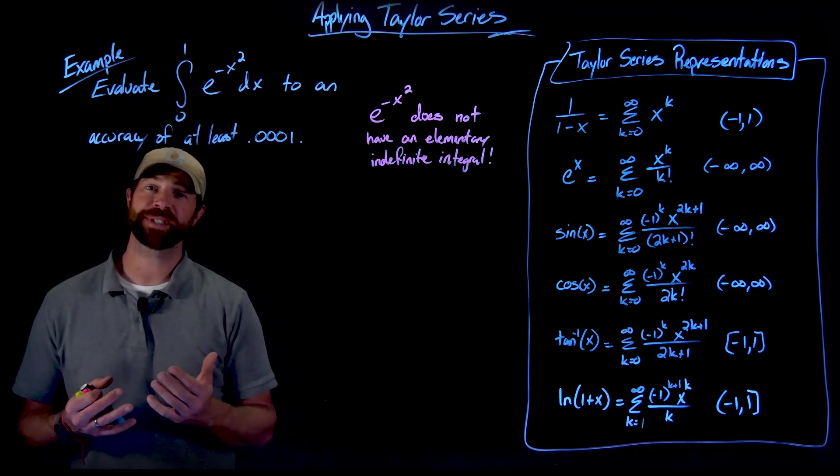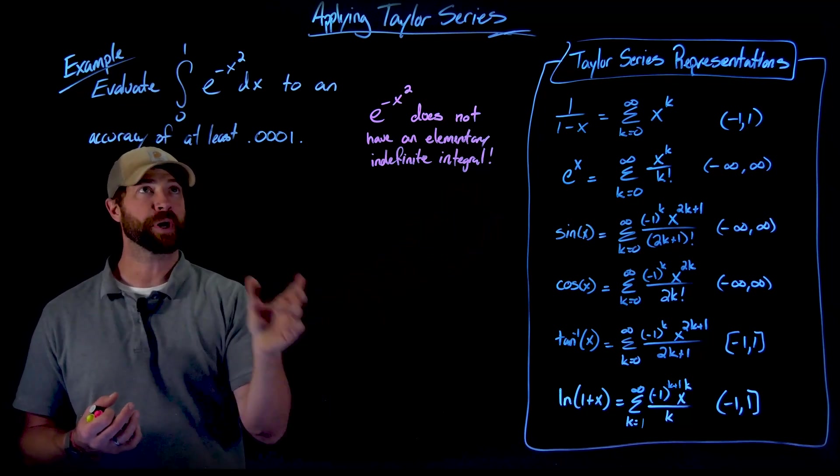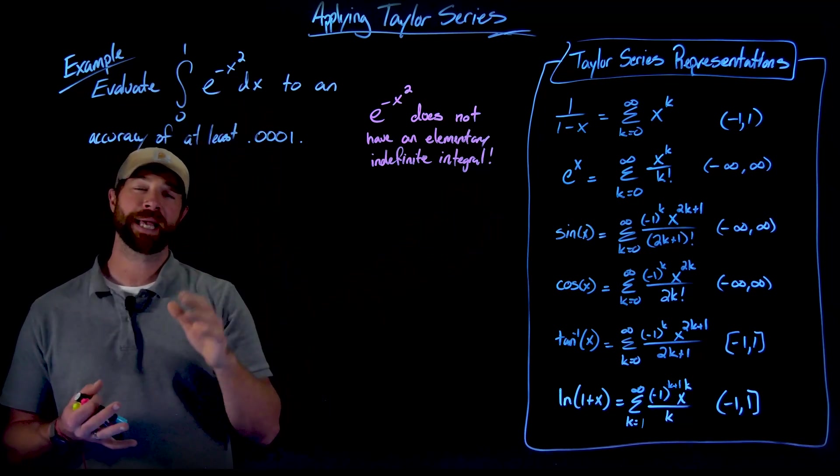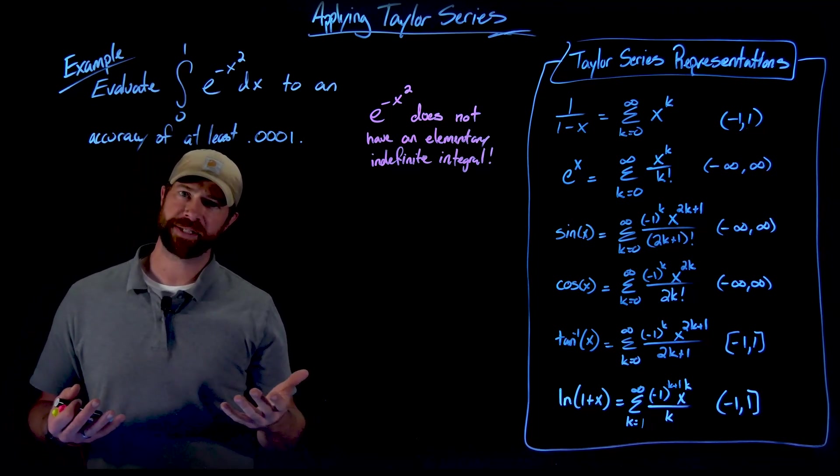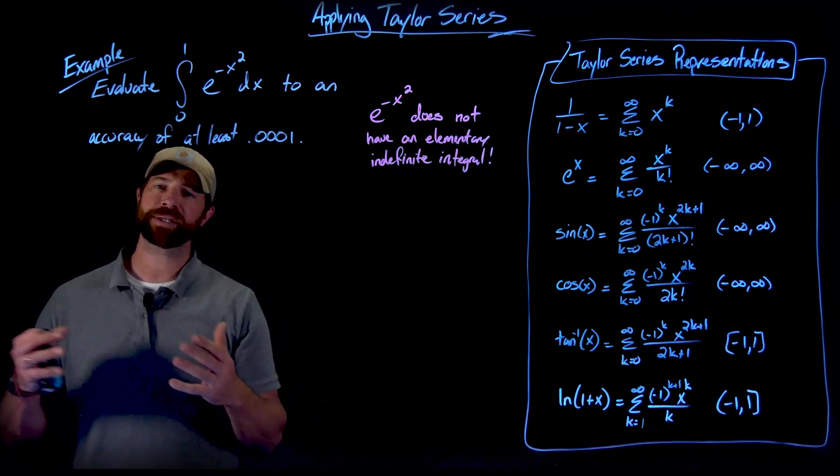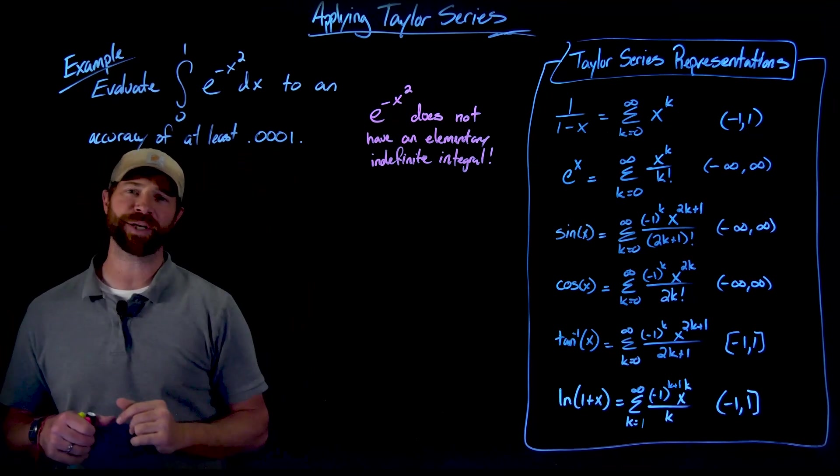So what we're clearly going to do instead is use the power series representation of e to the x, compose it with negative x squared, and then we're going to integrate. Importantly, we're going to be left with this infinite series and we'll have to remind ourselves of different properties we've had previously on how to get the accuracy that we need.